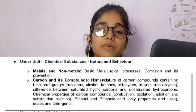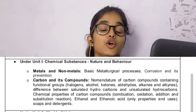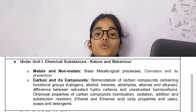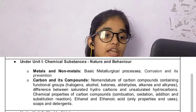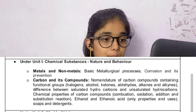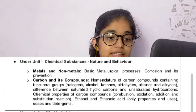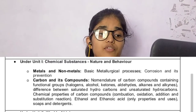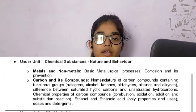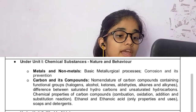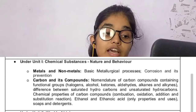Now let's talk about chapter number 4 - Carbon and Its Compounds. In this chapter, there are many topics that have been deleted. Every year there are some important questions from this chapter. The deleted topics include: Nomenclature of Carbon Compounds Containing Functional Groups - Halogen, Alcohol, Ketones, Aldehyde, Alkynes and Alkenes. This is a very important topic, but according to the 10th board, you will not have to learn this. Also deleted is: Differentiation between saturated hydrocarbons and unsaturated hydrocarbons.